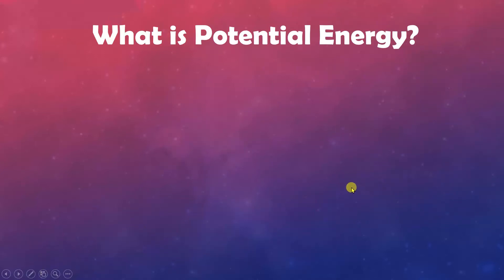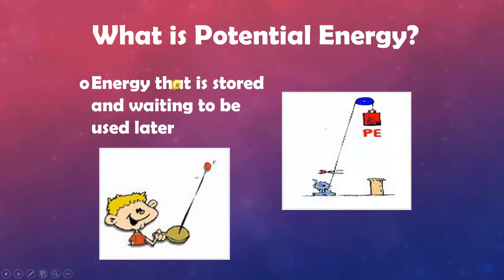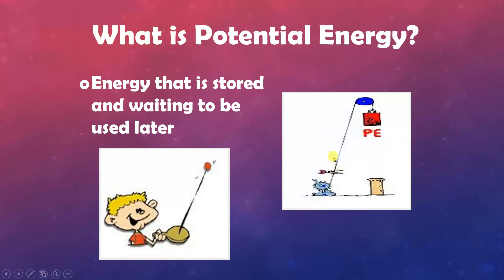What is potential energy? It is the energy that is stored and waiting to be used later. A sleeping puppy has stored energy; batteries have stored energy — these are called potential energy. For example, a load held up by a pulley has stored potential energy, waiting. When the rope is cut, it will release its stored energy and cause changes at the ground below.